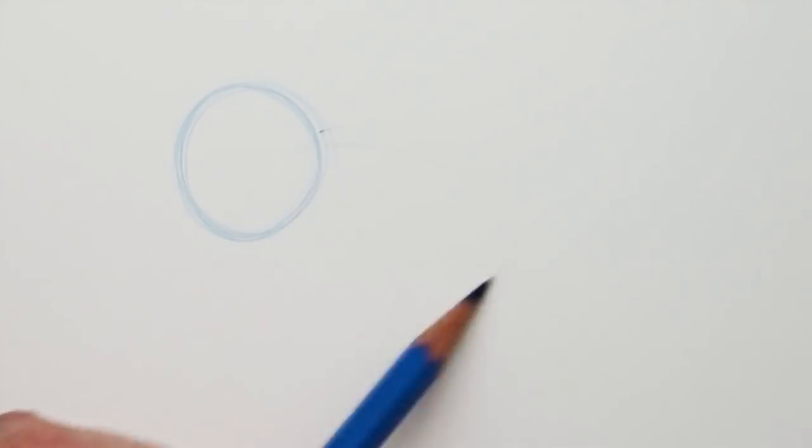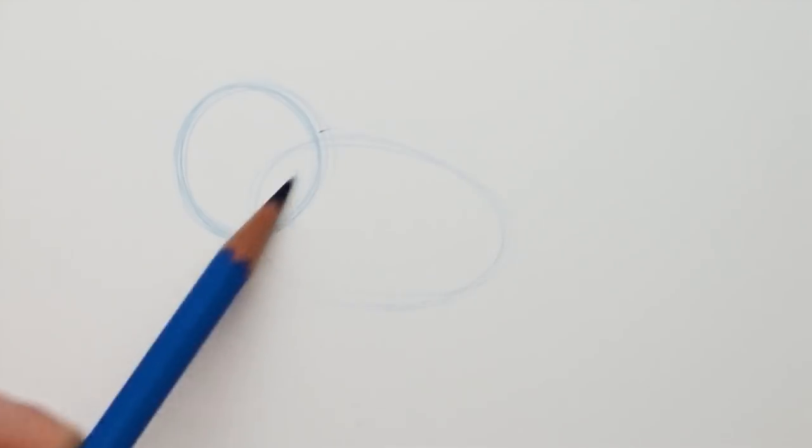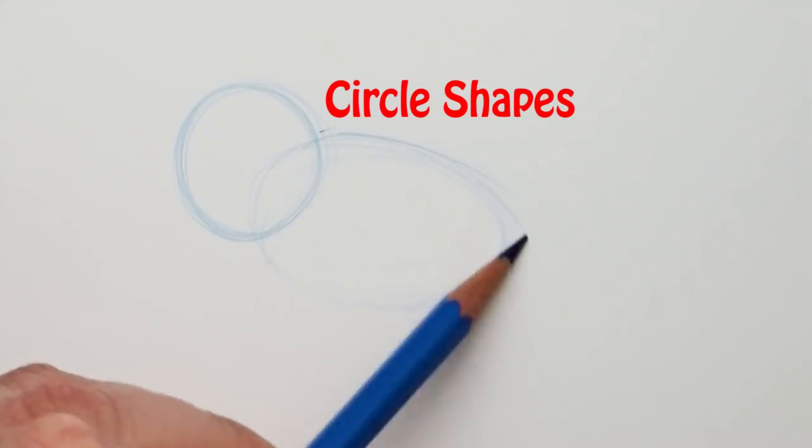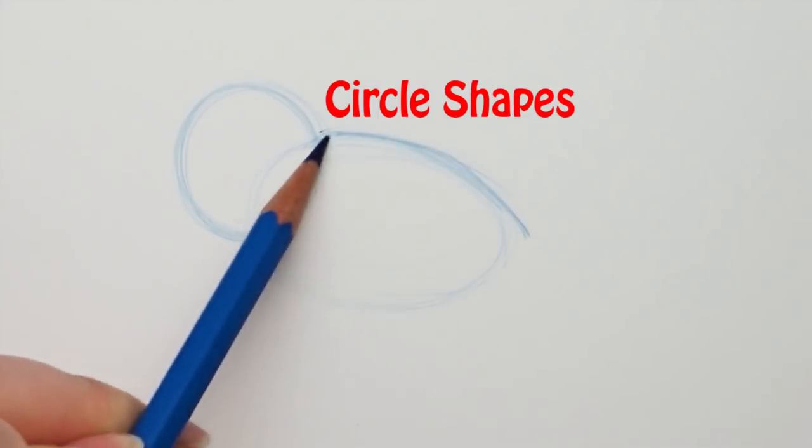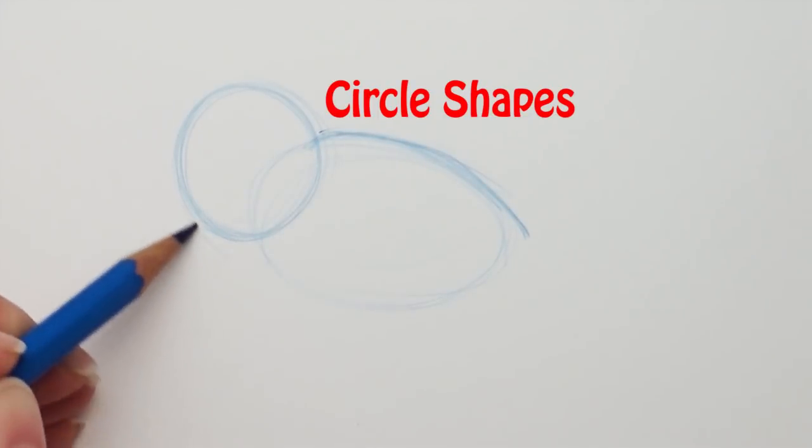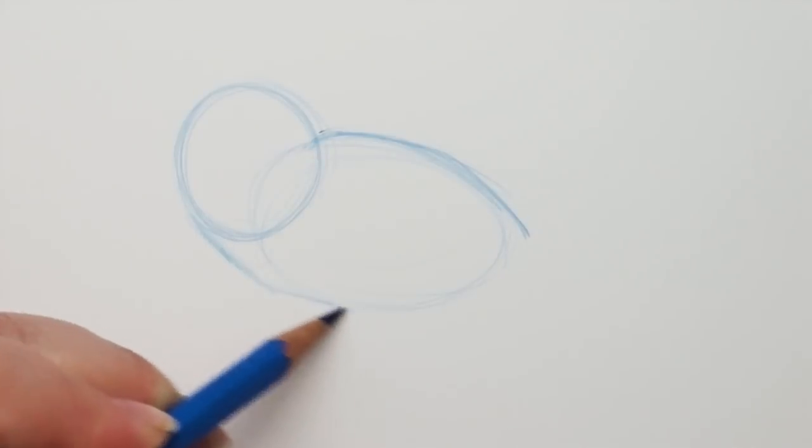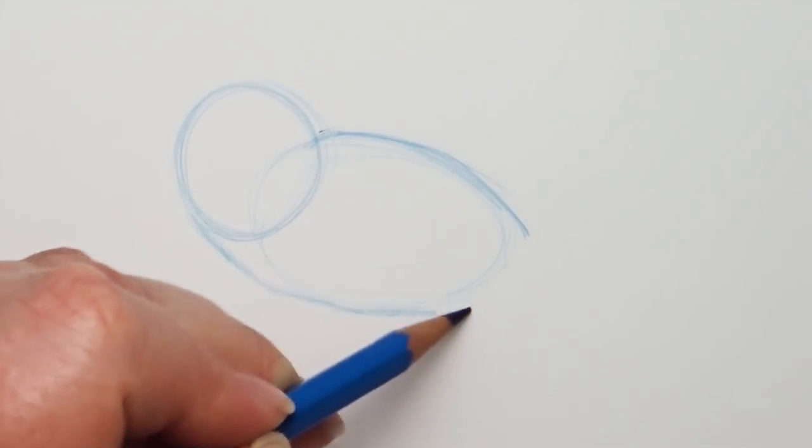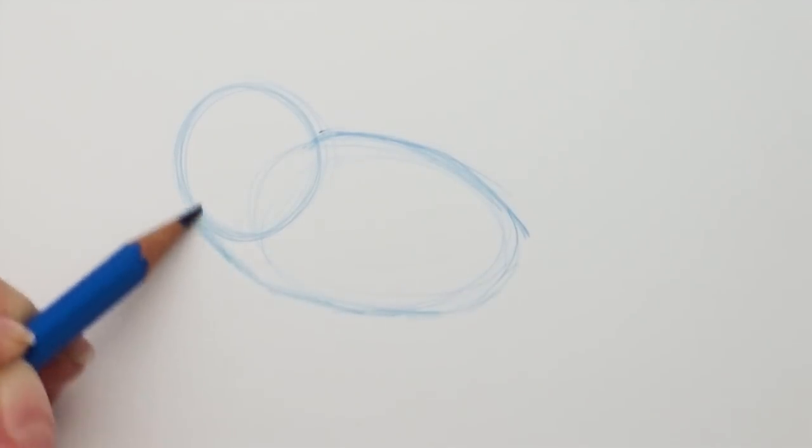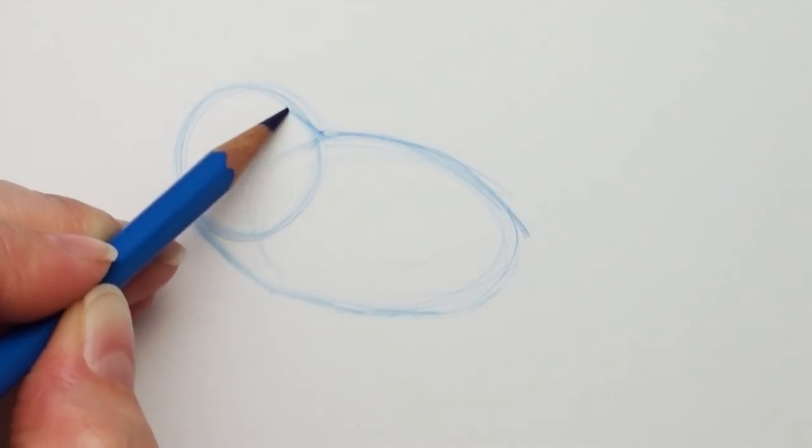Now when I start drawing anything, I look for the shapes that go into building up that drawing. And for the pig, I'm going to use a couple of circle shapes. One circle shape for the head, and then a kind of lima bean or oval shape for the pig's body. Once I have those two shapes in there, you can see they're a little bit overlapped.